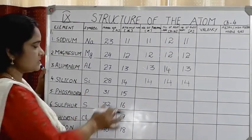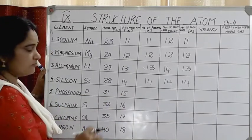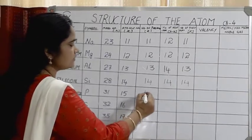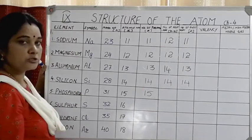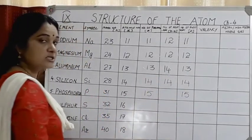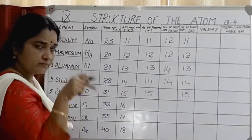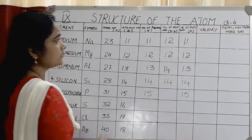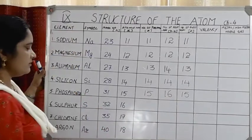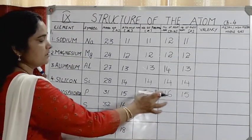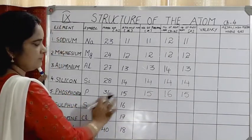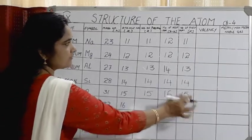Element number 15 is phosphorus, with mass number 31 and atomic number 15. Atomic number 15 = number of protons = 15. The number of electrons distributed in various shells around the nucleus is also 15. Number of neutrons = 31 minus 15 = 16. So phosphorus has 15 protons and 16 neutrons in its nucleus.